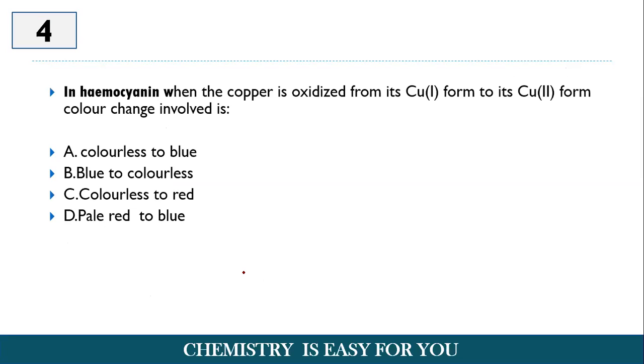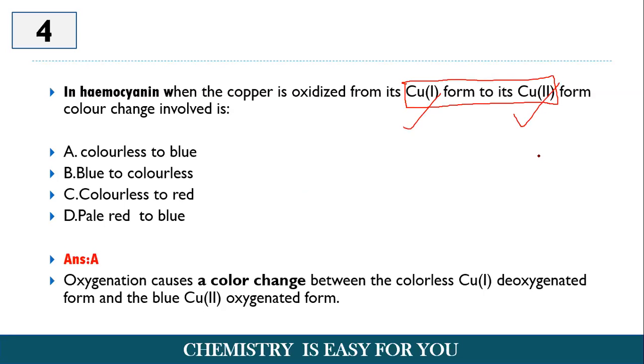Now towards the fourth question. In hemocyanin, when copper is oxidized from its Cu1+ form to Cu2+ form, the color change involved is. So first of all, the important point that you have to note down here is what is the oxidation number change that occurs during the hemocyanin from its deoxygenated to oxygenated form. So in the deoxygenated form, hemocyanin exists as Cu1+ and in the oxygenated form, it exists as Cu2+.